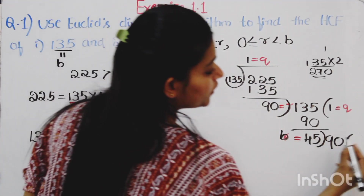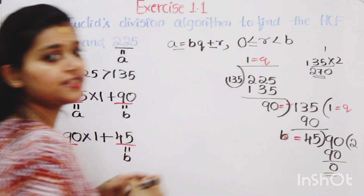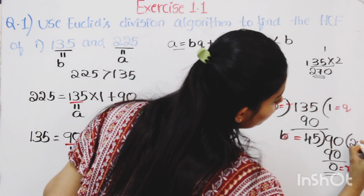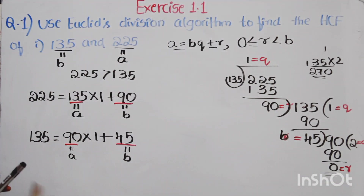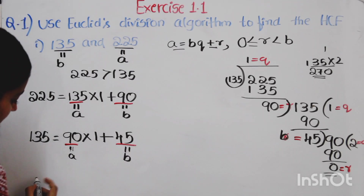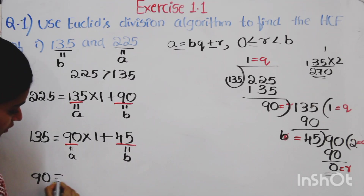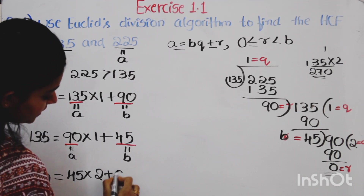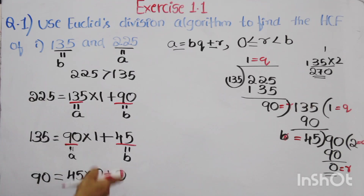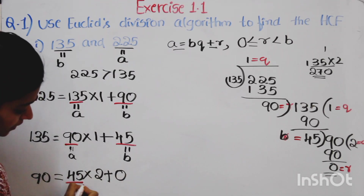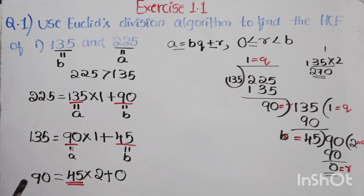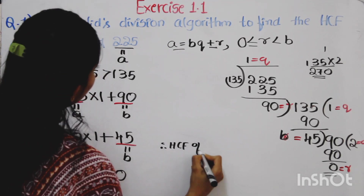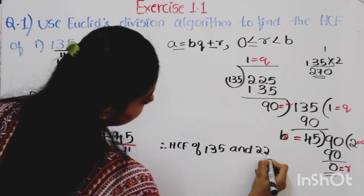Dividing 90 by 45, we get remainder 0. The division process stops here. The quotient is 2. Writing in the form A equals BQ plus R: A is 90, B is 45, Q is 2, and R is 0. Since the remainder is 0, at this stage the value of B — the divisor — is 45. Therefore, HCF of 135 and 225 is 45.